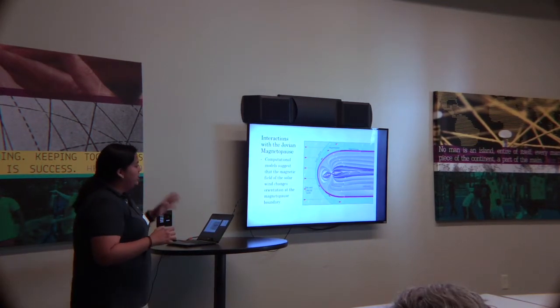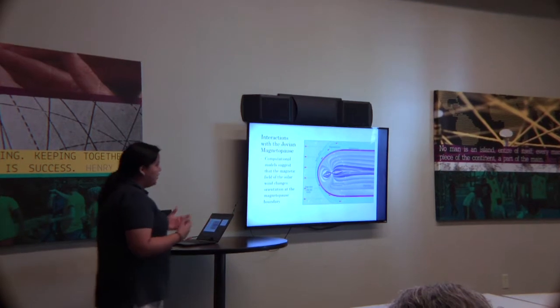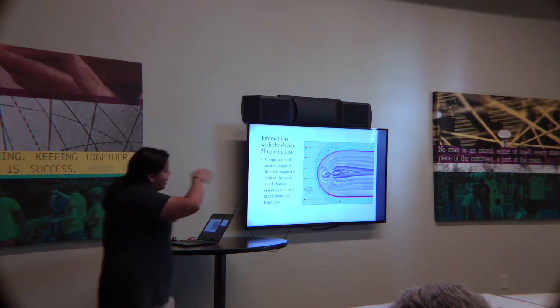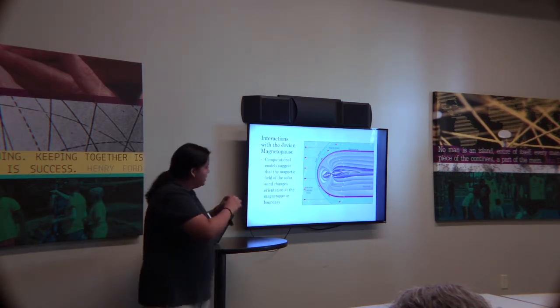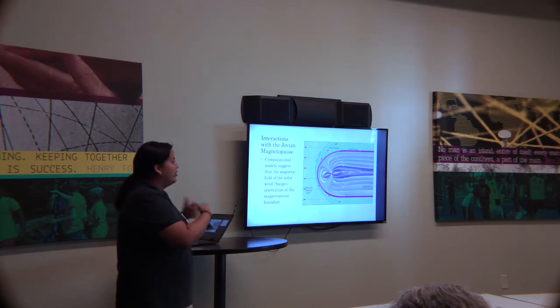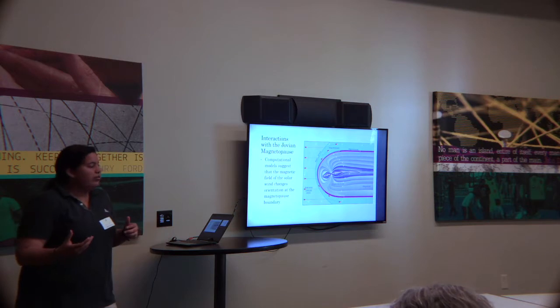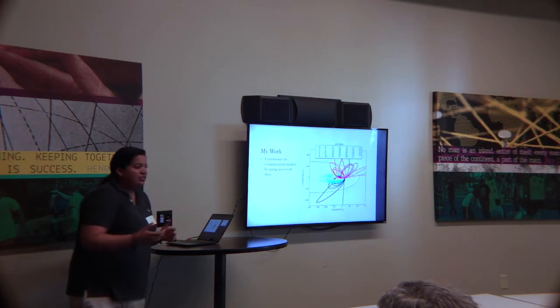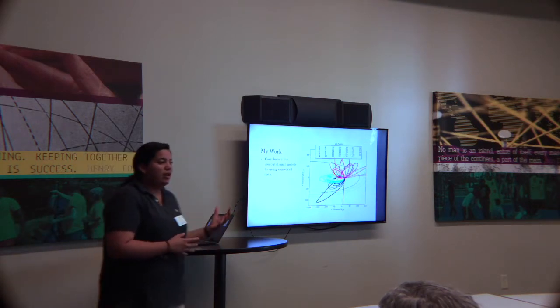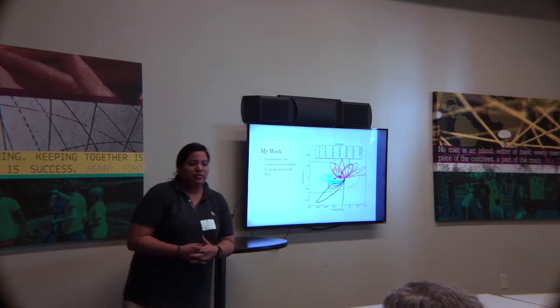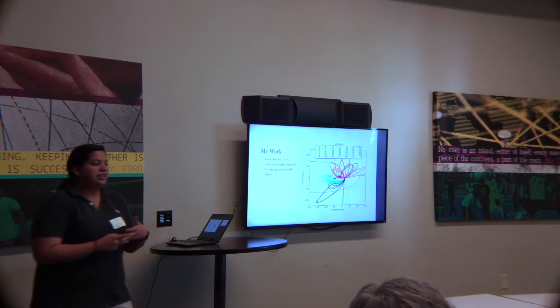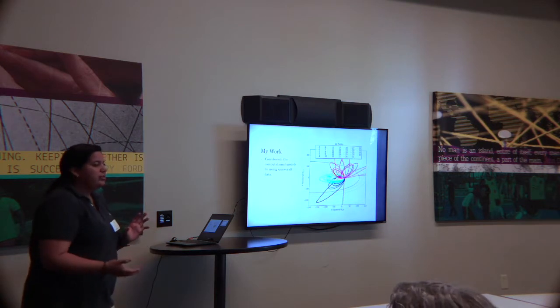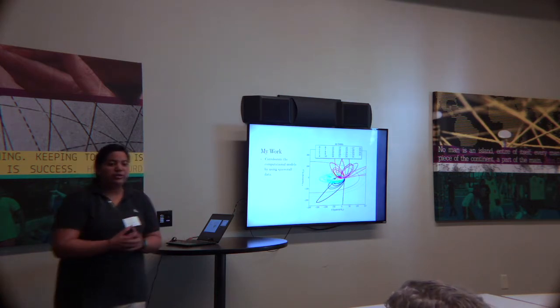And so on the picture to the right, we see what the Jovian magnetosphere looks like. It's a little bit different from Earth because if you see at the center, we still see Jupiter, the planet itself. The white lines represent the magnetic field from Jupiter. But if you look close to it, you'll see this yellow dashed ring. And so that is what causes the unique shape for Jupiter. And so what I'm trying to do is to corroborate this theory, this computational model, through spacecraft data. So I'm using Galileo, which was a spacecraft that was launched in 1989 and orbited Jupiter until 1996.